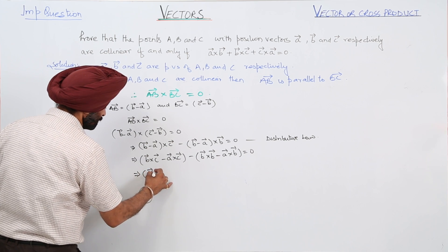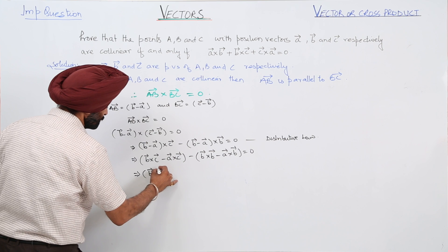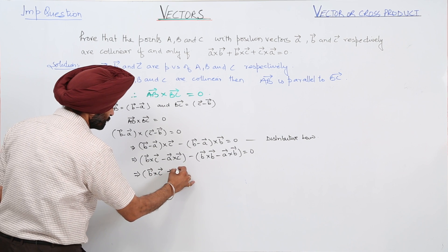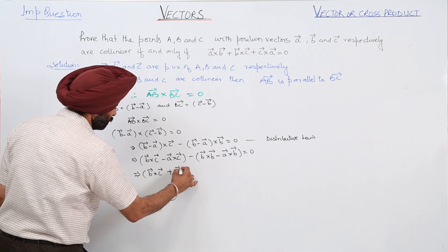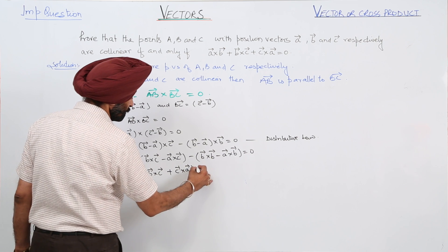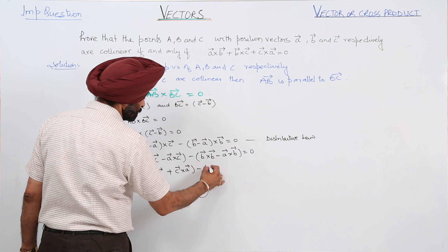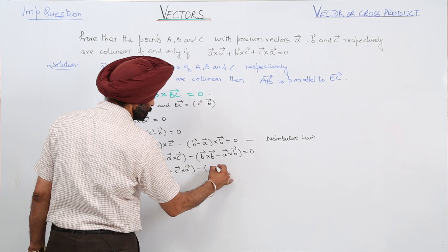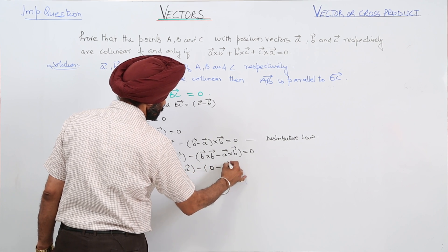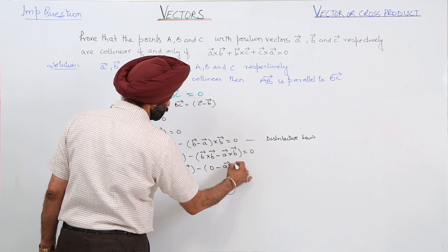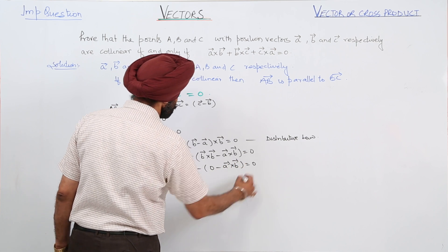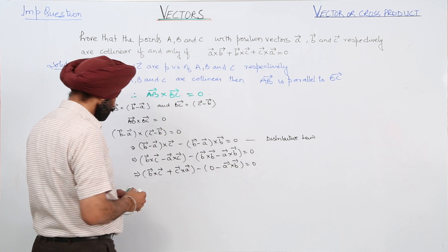Expanding, we get: vector B cross vector C plus vector C cross vector A minus vector A cross vector B is equal to zero.